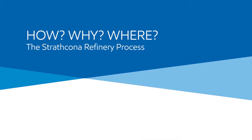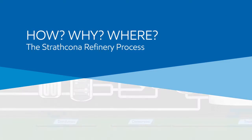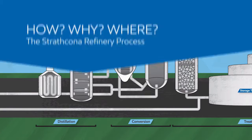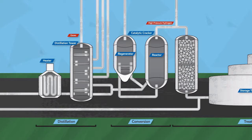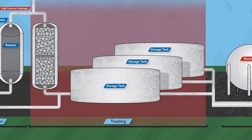So how do we turn raw crude into the useful products that people need? The refining process includes four basic stages: distillation, conversion, treating and blending.